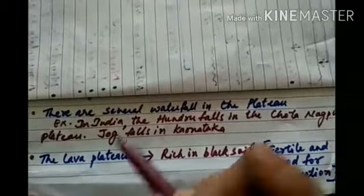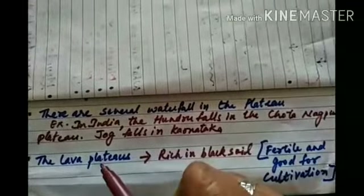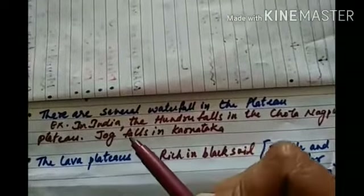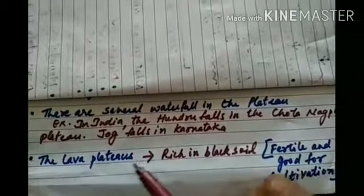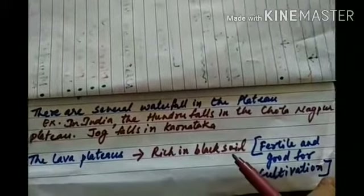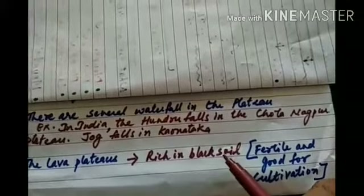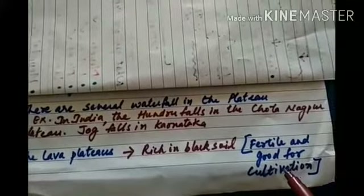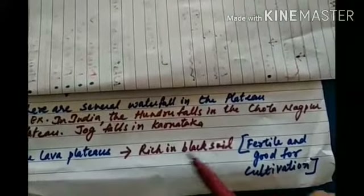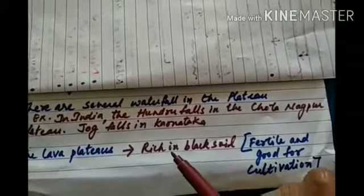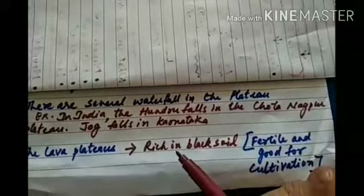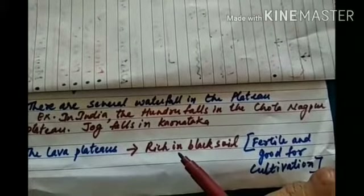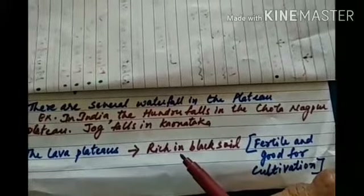The lava plateaus, which are formed from the lava that comes out of volcanoes, are rich in black soil. This black soil is very good for the cultivation of crops — for example, like the Deccan plateau.